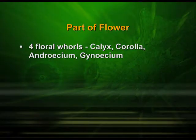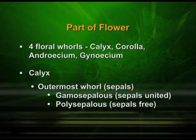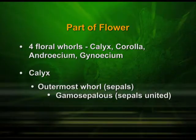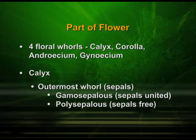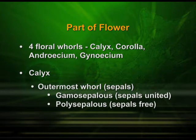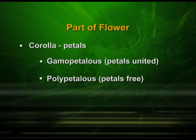The parts of a flower: four floral whorls are found — calyx, corolla, androecium, and gynoecium. The outermost whorl is the calyx and the innermost whorl is the corolla. Basing on this, they can be gamosepalous or polysepalous. When the sepals are united, they are called gamosepalous; when the sepals are free, they are polysepalous. In case of corolla also, we find gamopetalous and polypetalous — gamopetalous wherein the petals are united and polypetalous when the petals are free.